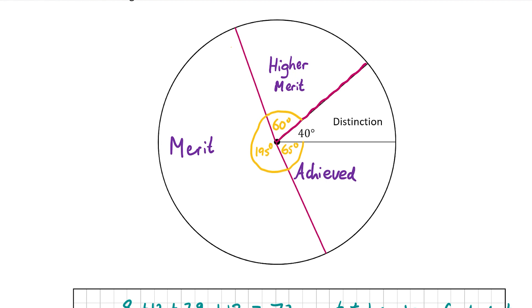There are other ways to work out how many degrees you need for higher merit, merit and achieved. I used the formula shown on screen, but each method will give you 60 for higher merit, 195 for merit and 65 for achieved. Whichever way you prefer you can use, however in my opinion following the formula is the simplest and most straightforward way. That's your answer for Part A, which was worth 15 marks.